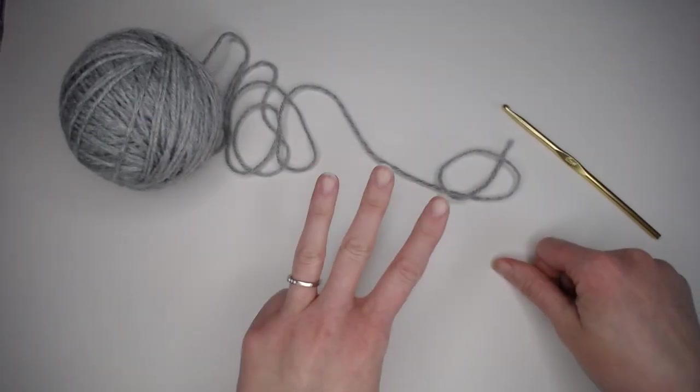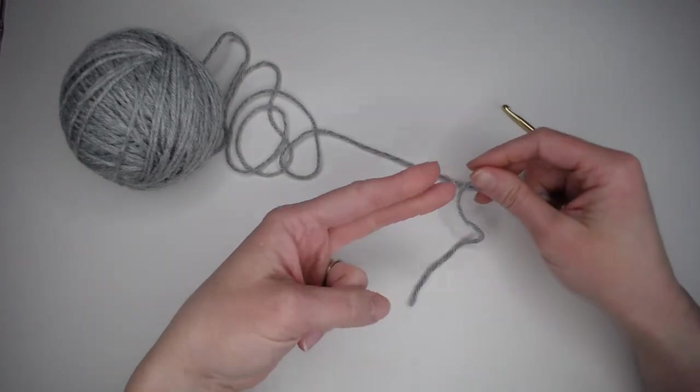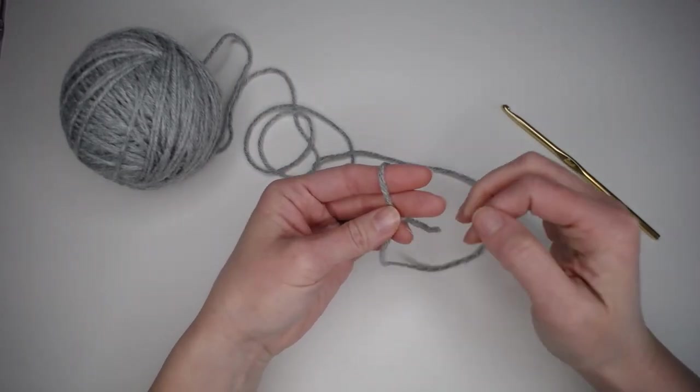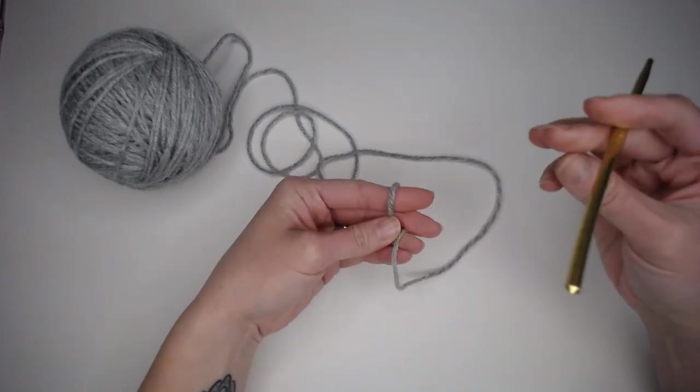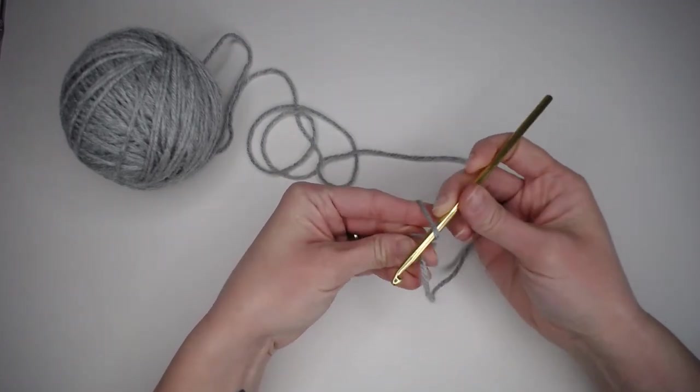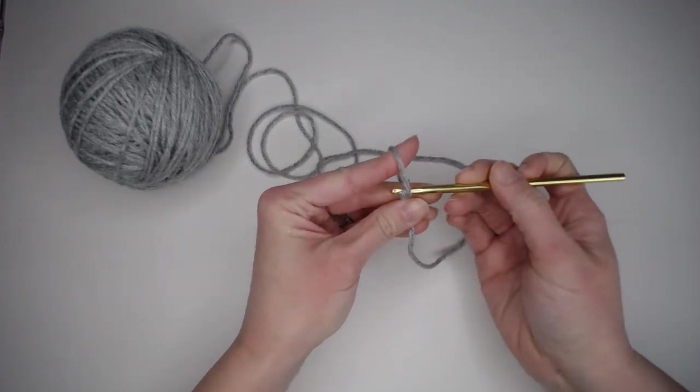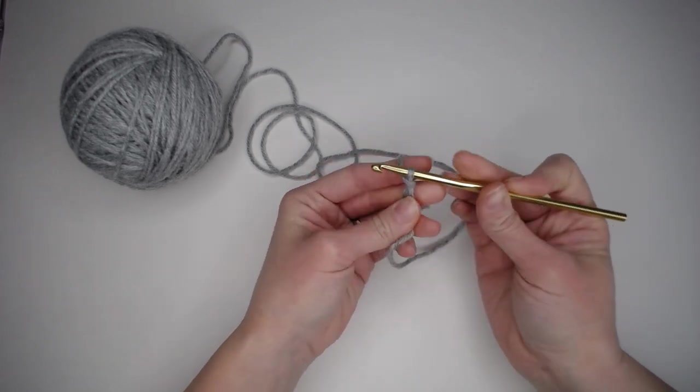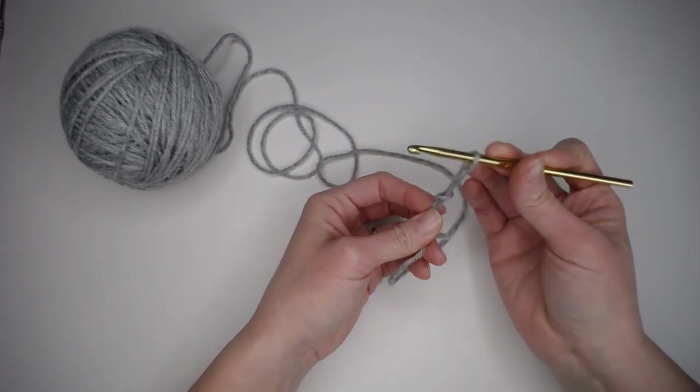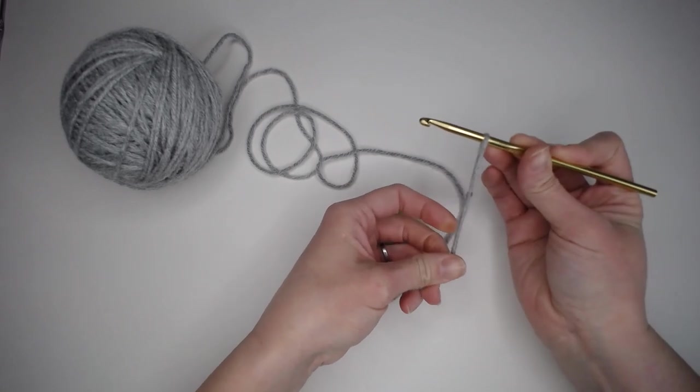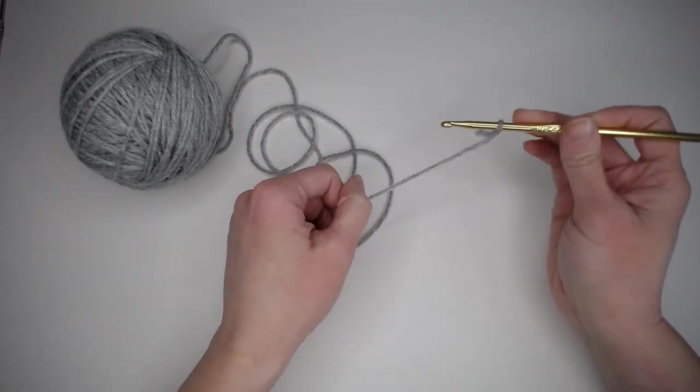The third technique that I see often is taking two fingers, wrapping the yarn around both fingers just the one time, inserting your crochet hook, grabbing the yarn, pulling the yarn through the circle, and then pulling tight. And that forms a slipknot.